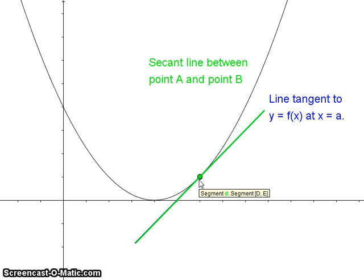Now with that second point very close to that first point, the slope of the secant line is going to be very close to the slope of the tangent line.